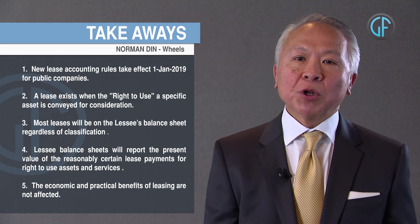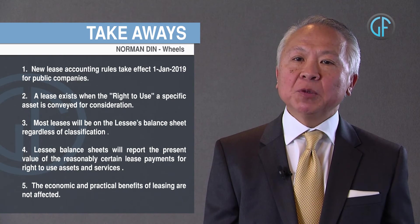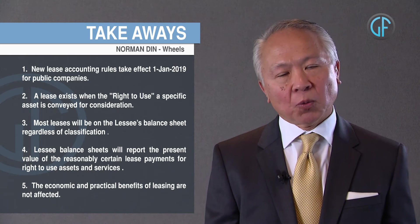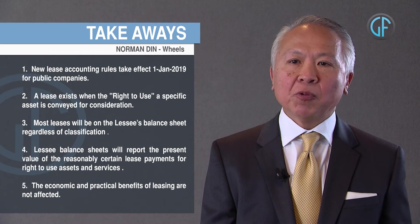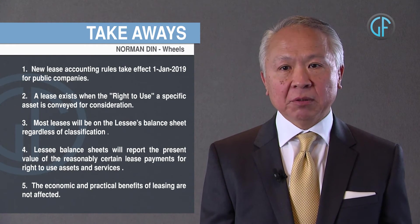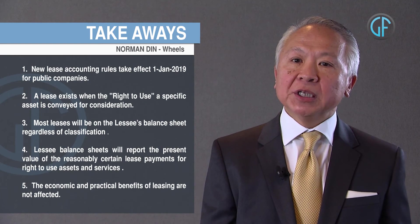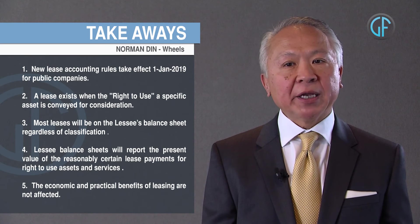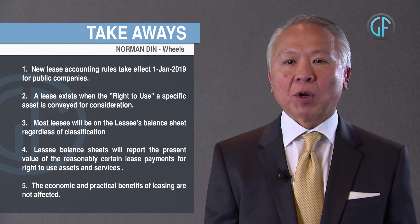The value that will be reported will be the present value of the reasonably certain lease payments for the right to use assets. For example, if you have a 36-month closed-end lease, the net present value for the 36 months will show up as both an asset and a liability. The discount rate will either be the interest rate within the lease or, if that can't be readily determined, a corporate incremental borrowing rate. Services can be excluded if they can be readily separated from the lease payments.